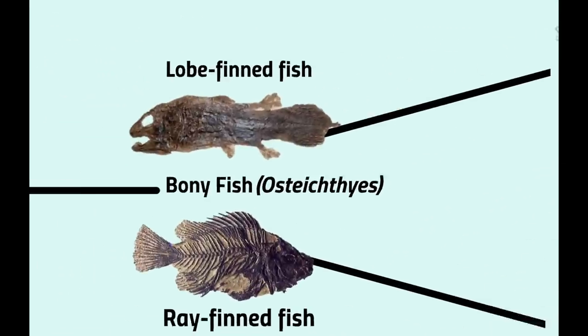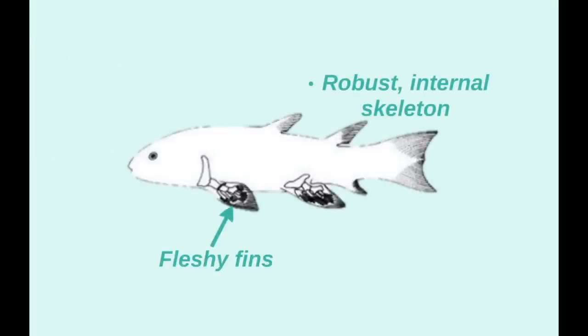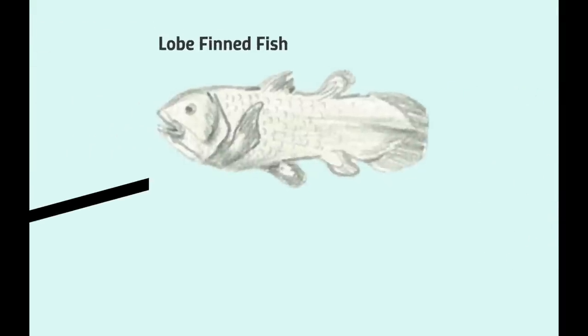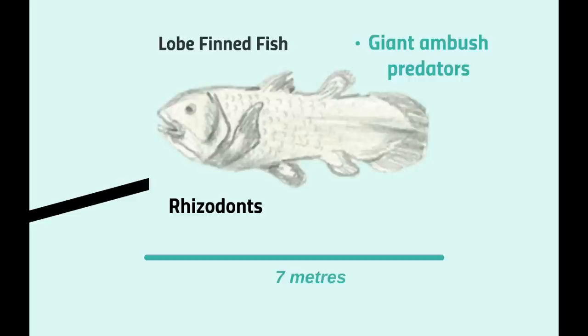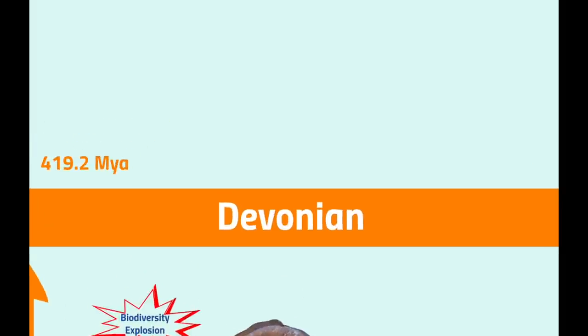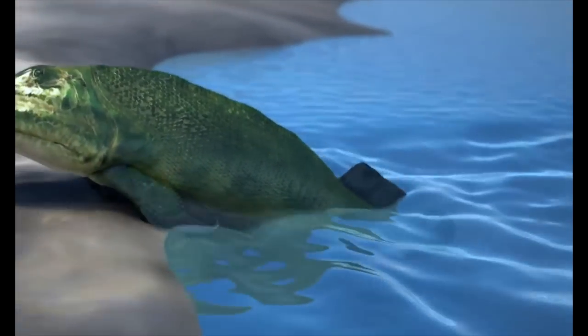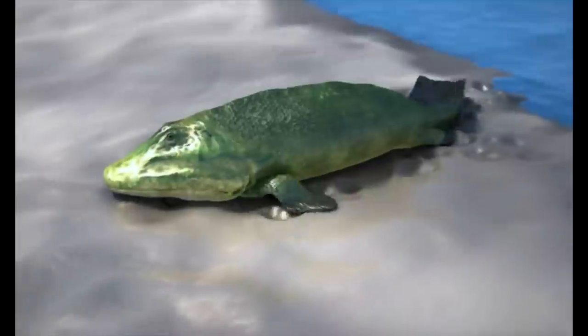The other major class of the Osteichthyes is the lobe-finned fish, characterised by fleshy fins with a robust internal skeleton and musculature. The lobe-finned fish display massive diversity during the Devonian and were especially successful in freshwater environments, where they received less competition. Take for example the rhizodonts — this order of lobe-finned fish could attain sizes of up to 7 metres and were apex predators of the Devonian lakes and rivers. In the late Devonian, a pioneering group of lobe-finned fish made the transition from water to land, becoming the first tetrapods. Every living amphibian, reptile, mammal and bird can trace its origins back to this major evolutionary step.